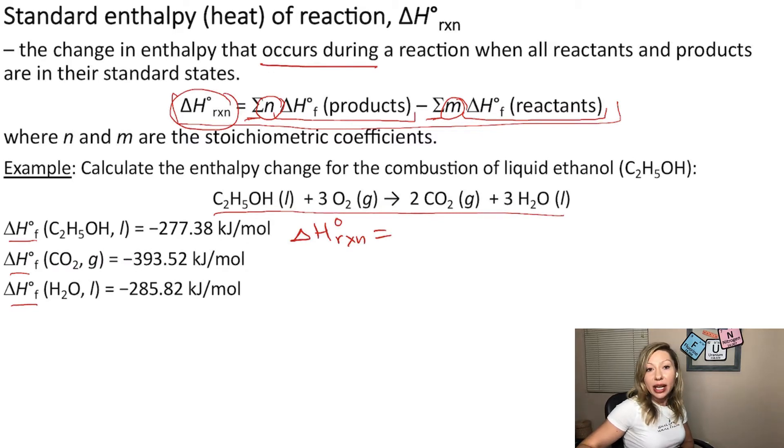So first, we need to take a look at the products. What is my first product? It's CO2. How many moles of it do I have? 2. So I need to use the stoichiometric coefficient from the equation. So 2 moles multiplied by the heat of formation of CO2 gas.